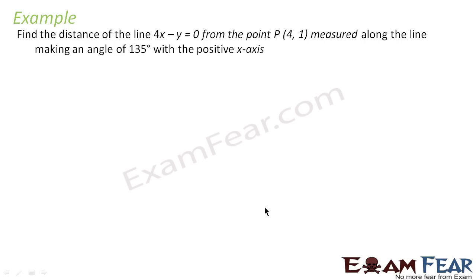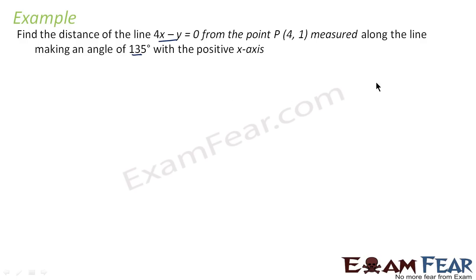The question says you have to find the distance of the line 4x minus y is equal to 0 from point (4, -1), measured along the line making angle 135 degrees with the positive axis. Please note we are not supposed to find perpendicular distance here. We are supposed to find the length of the line along a particular angle.